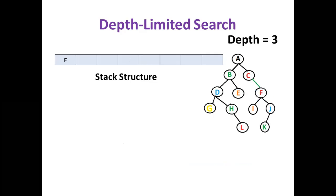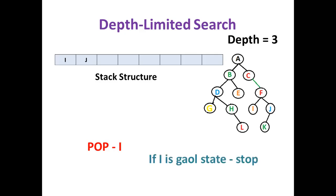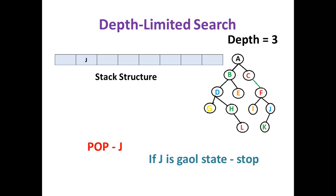While exploring F, its children I and J are added to the stack. I is popped and checked as the goal state; if not, it is removed. J is popped and checked. If J is not the goal state, we stop and report no goal state found — because J's only child K has a depth greater than the predefined limit, so it cannot be included in the search. The procedure stops and returns that the goal state was not found. This concludes depth limited search.